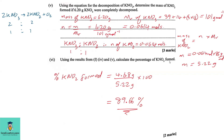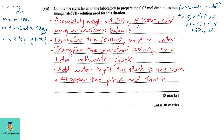Question 1f part 6: Calculate the percentage of potassium nitrite formed. Percentage = (mass from part 4 / mass from part 5) × 100 = (4.68 / 5.22) × 100 = 89.66%.